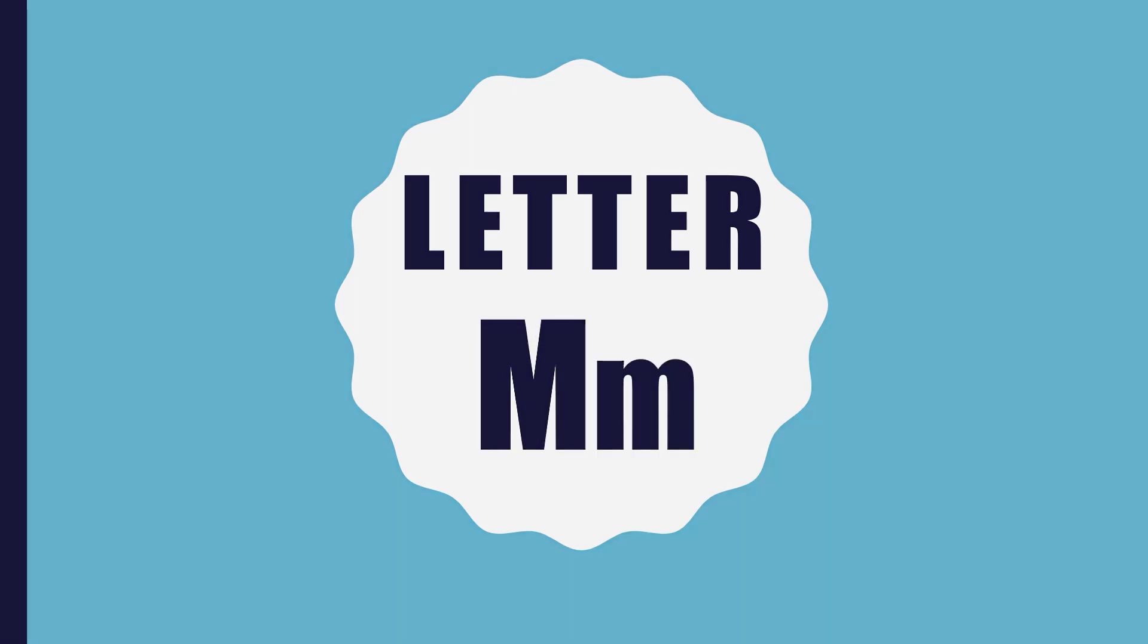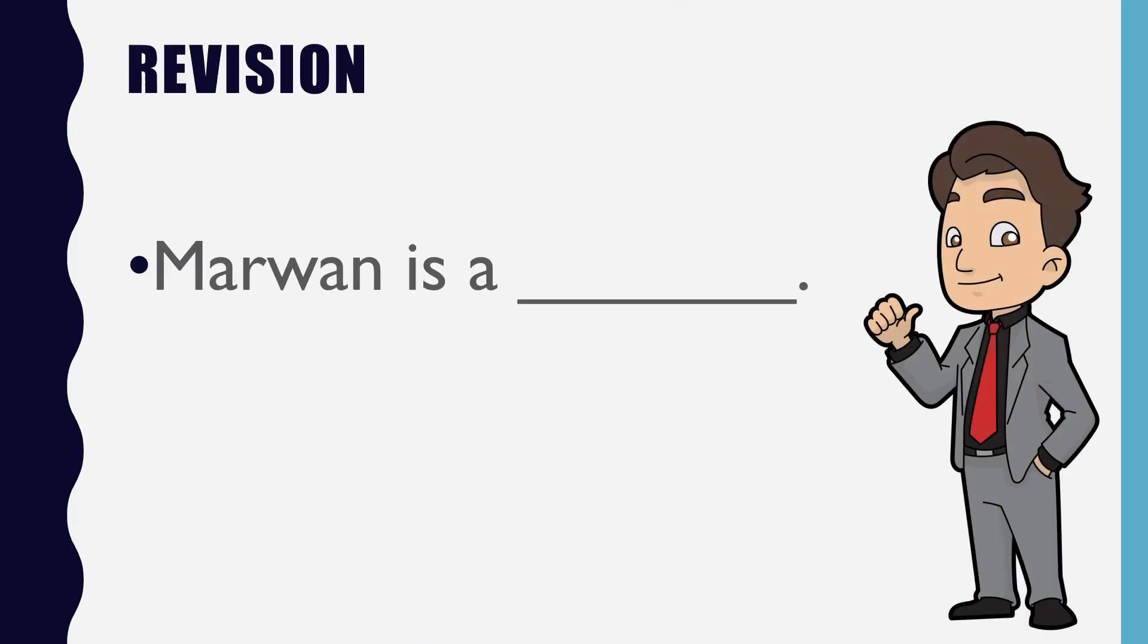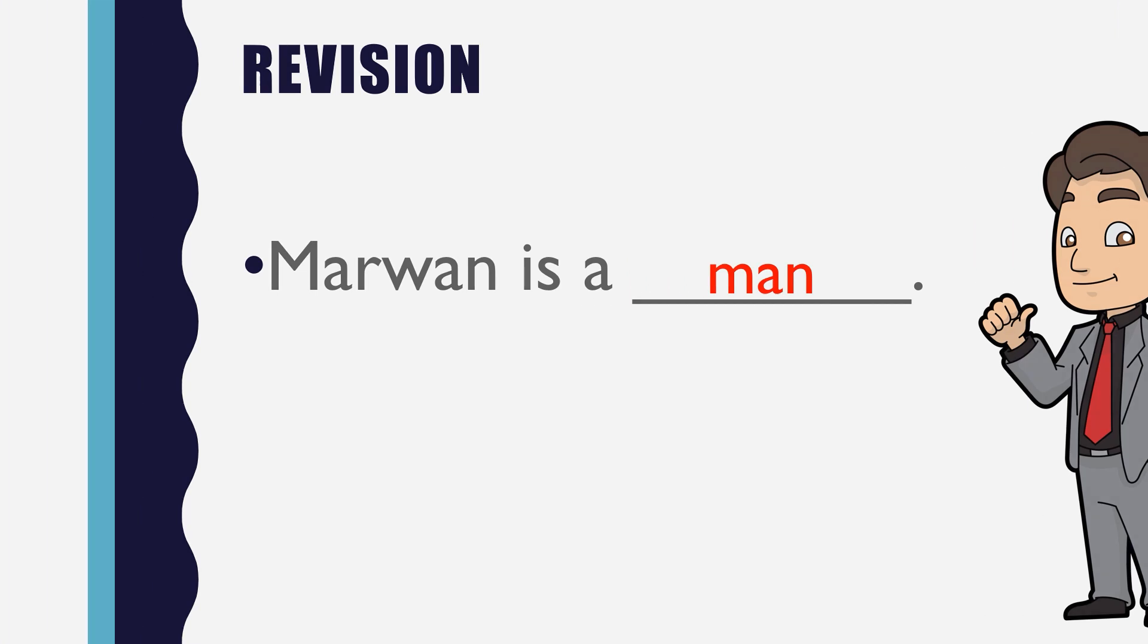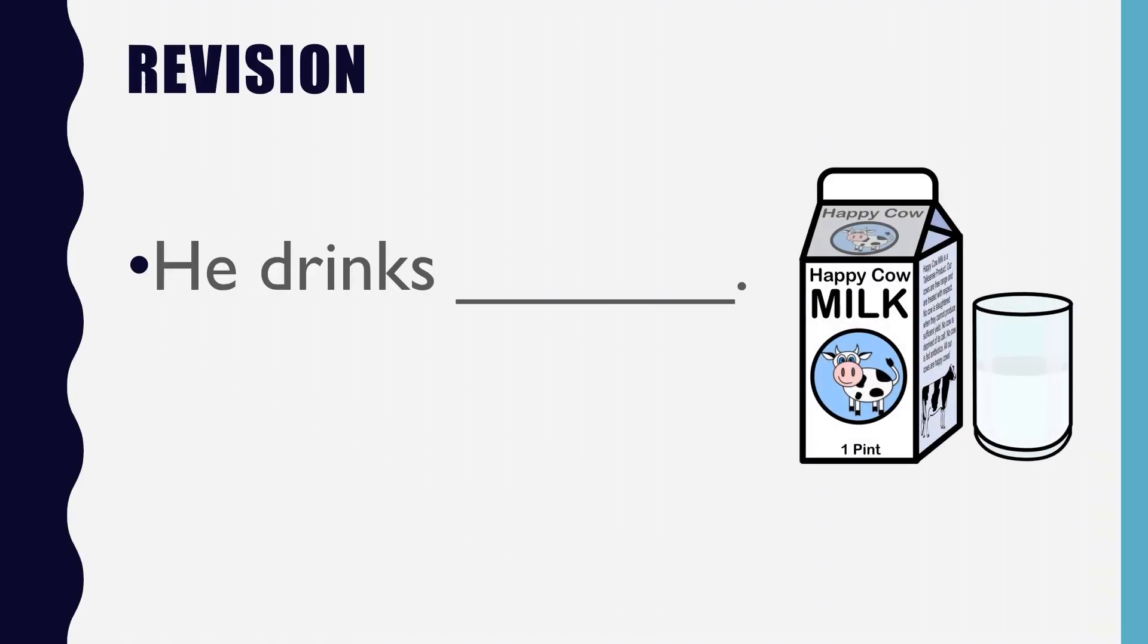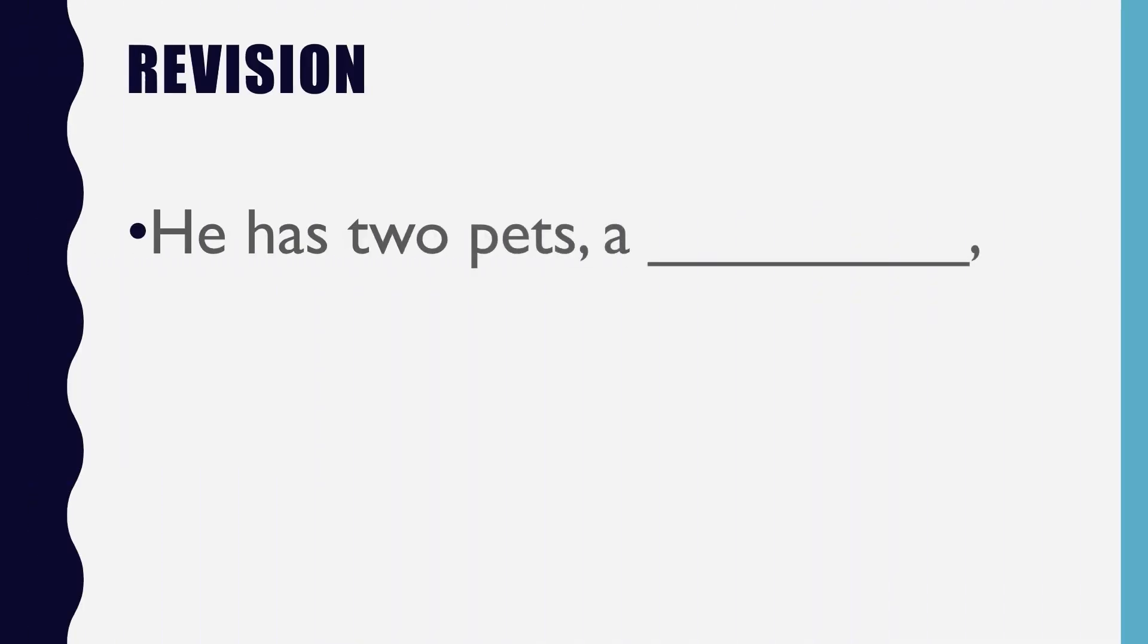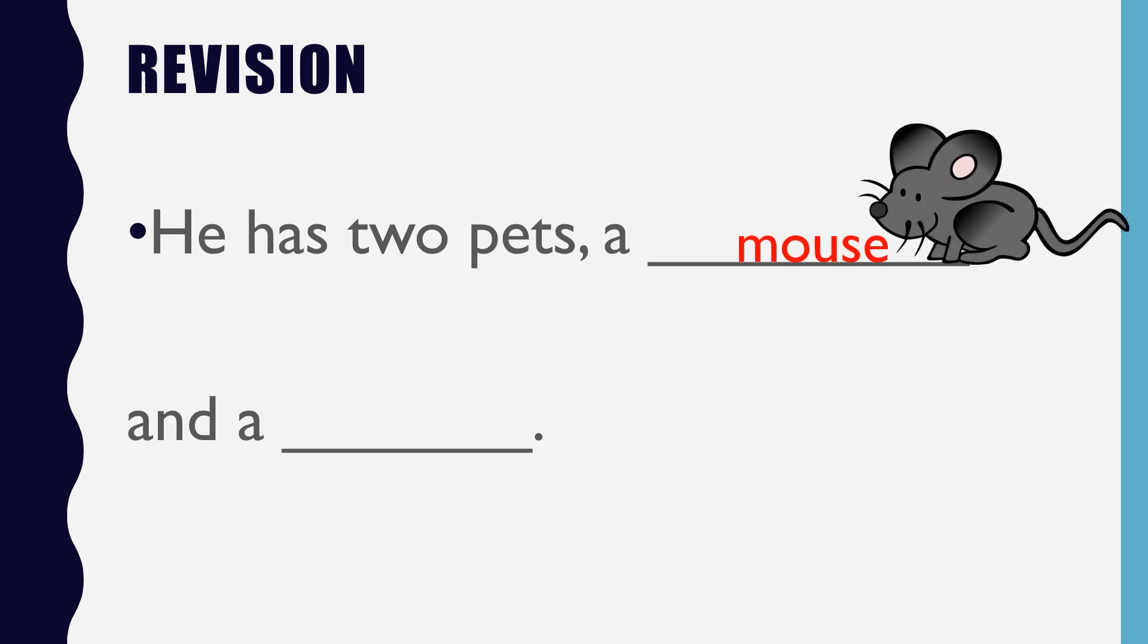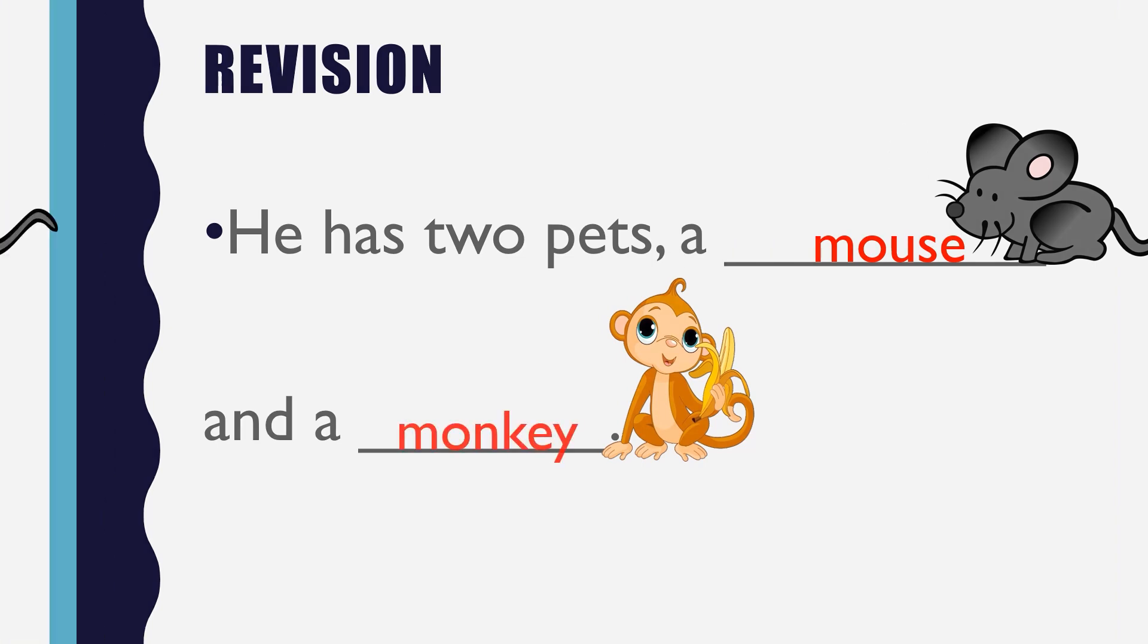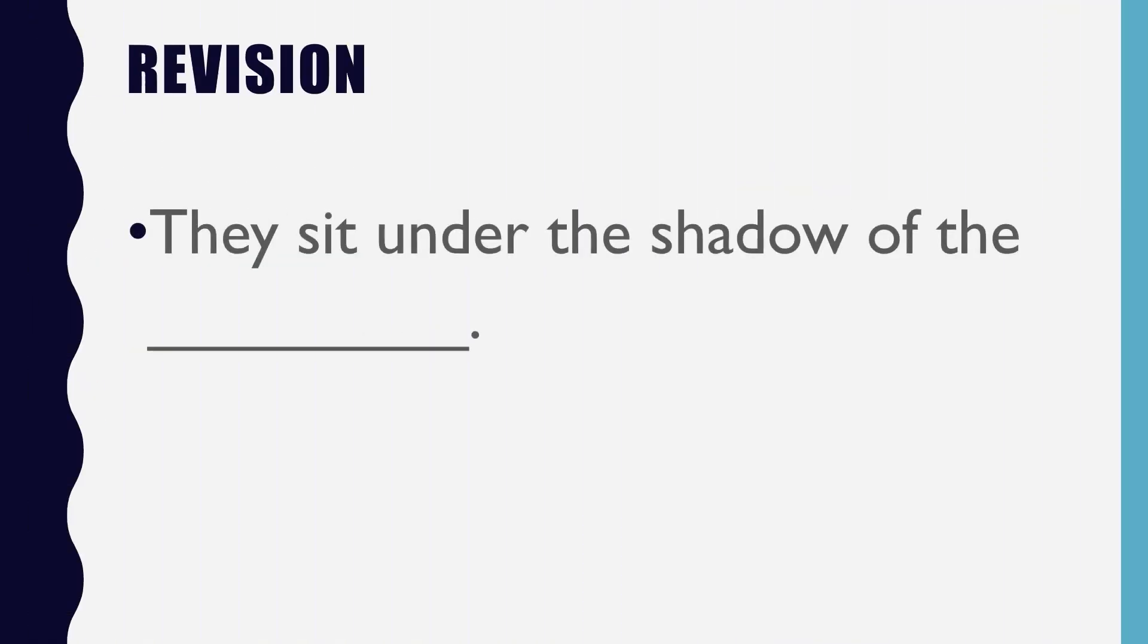Letter M, let's review. Marwan is a man, he drinks milk. He has two pets, a mouse and a monkey. They sit under the shadow of the mushroom.